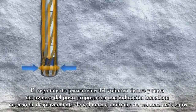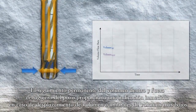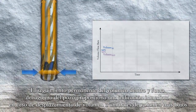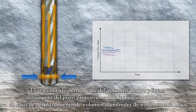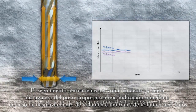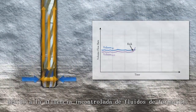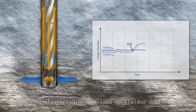The continuous tracking of volume in and out of the wellbore provides an immediate volume displacement indication at lower volume thresholds due to the uncontrolled influx of formation fluids.